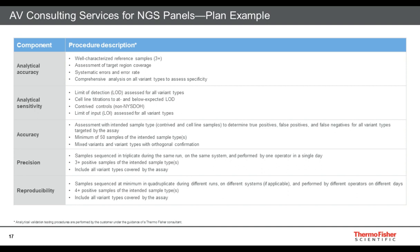This is a high-level overview of a validation plan example. We start with analytical accuracy — running well-characterized samples such as Coriell HapMap samples or Genome in a Bottle. What you're really doing is assessing the error rate of your sequencing, because these samples have been sequenced thousands of times and their data is publicly available for comparison with your generated data.